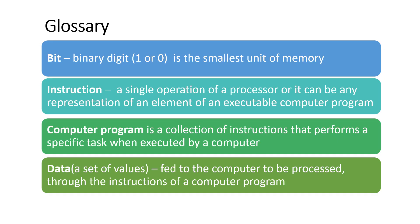Before going into the architecture of a computer, we can see some terms related to that. A bit, which is the binary digit — that is 1 or 0 — is the smallest unit of memory. An instruction is a single operation of a processor, or any representation of an element of an executable computer program. A computer program is a collection of instructions that perform a specific task when executed by a computer. Data is what is fed to the computer to be processed through the instructions of a computer program.